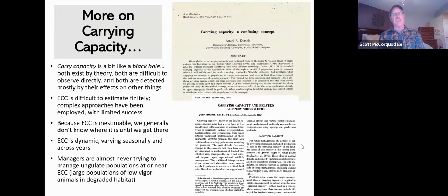Because of that, we generally don't know where ECC is until we get there and start to see these strong effects that are observable. Again, it's dynamic—it varies seasonally and across years. This is an important point: managers are almost never trying to manage ungulate populations at or near ECC. Those would be large populations, low vigor animals in degraded habitat. That's really almost never the goal. I guess you could argue that the Park Service's natural regulation paradigm is kind of that, but most agencies managing for, for example, hunting are not going to be at all trying to manage populations to this point where they're really under strong density-dependent effects.